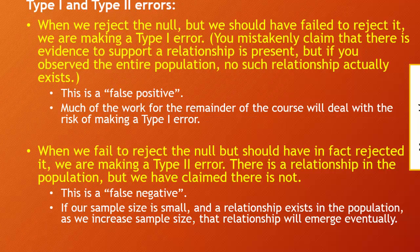If the relationship actually exists in the population as a whole, if we sample enough observations, eventually that relationship will emerge. To overcome a type 2 error, we would increase sample size, and type 2 errors are most likely present when we have very small samples. If we have a very large sample and still do not have a statistically significant relationship, it's likely that even if we observed the entire population, the differences between the two sub-sample scores would be relatively negligible.